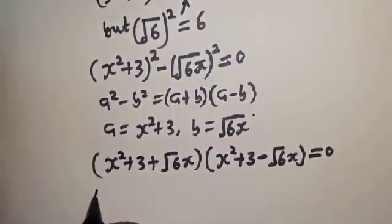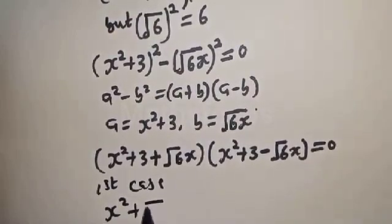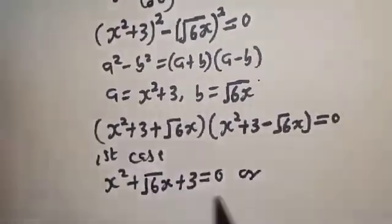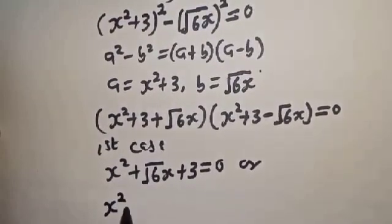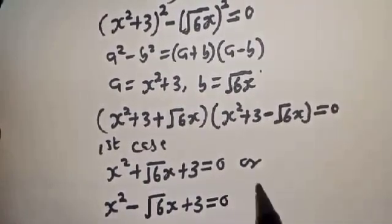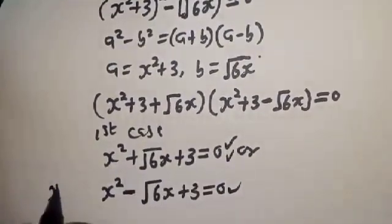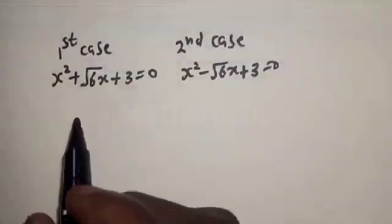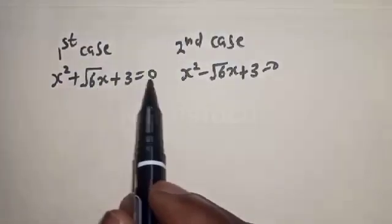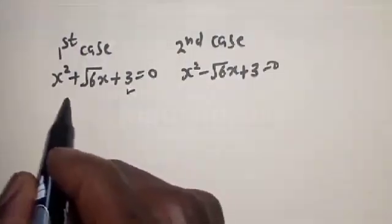There are two cases here. The first case: x-squared plus root(6)·x plus 3 equals 0, or the second case: x-squared minus root(6)·x plus 3 equals 0. Both are quadratic equations and we will solve them using the quadratic general formula.